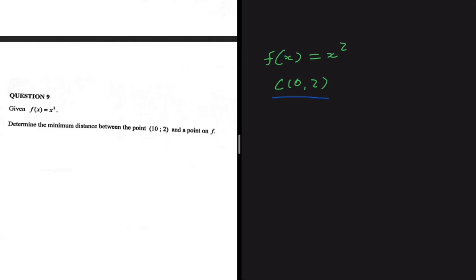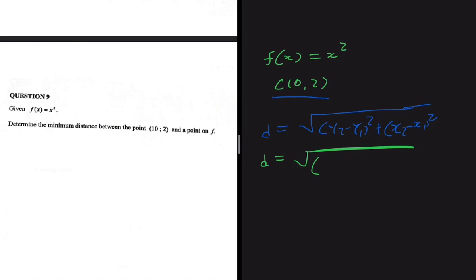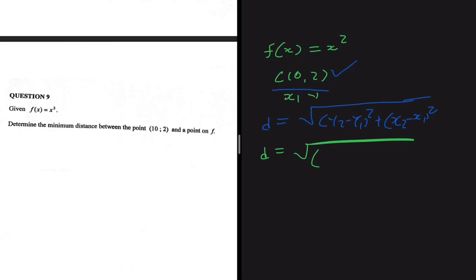If we do it for the function itself, we can say that the distance equals the square root of (y₂ - y₁)² + (x₂ - x₁)² — nothing complicated. Our distance will then be set up as follows: we have our given point (10, 2), so we let x₁ = 10, y₁ = 2. For x₂ and y₂ we use the function itself, because for every point on f(x) we have some coordinate x and the corresponding y value x².